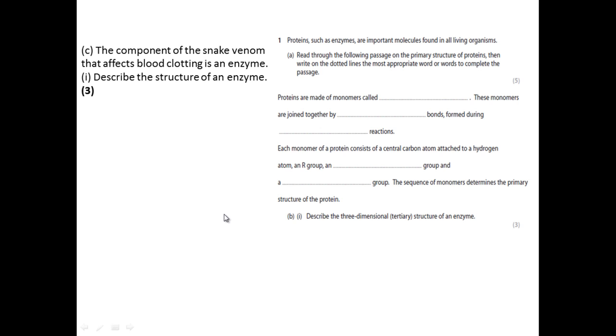The first question, part C. The component of snake venom that affects blood clotting is an enzyme. Describe the structure of an enzyme.